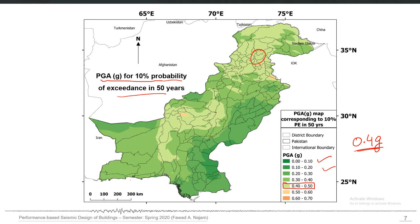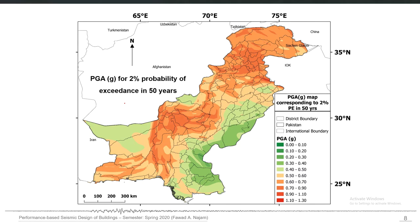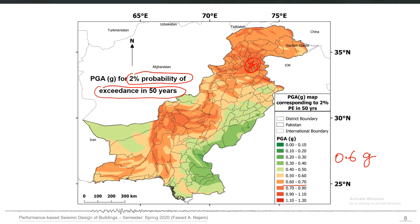If we change the definition of hazard — for example, 2% probability of exceedance in 50 years — the PGA values will be different; they will be higher. For the same sites, you may have a higher number, maybe 0.6 to 0.7g. This 2% probability of exceedance in 50 years is sometimes referred to as the MCE level, or Maximum Considered Earthquake. This is the level for which the performance of structures is mostly evaluated.